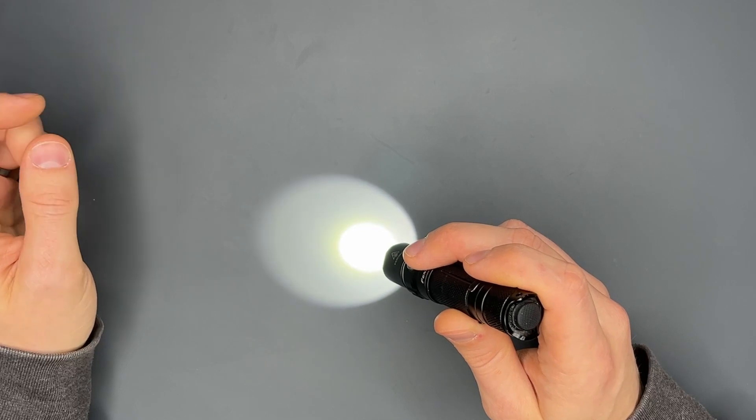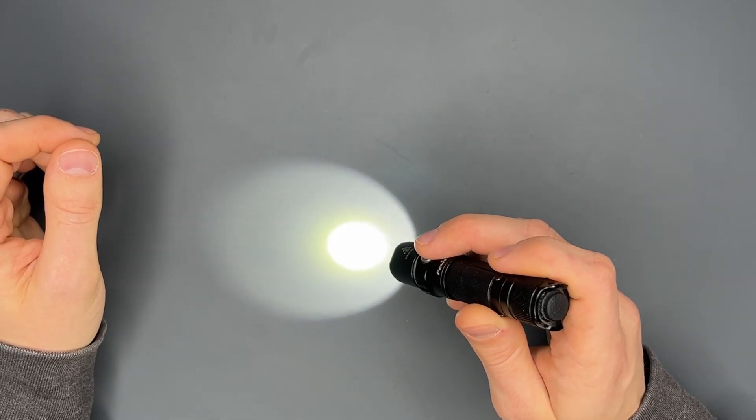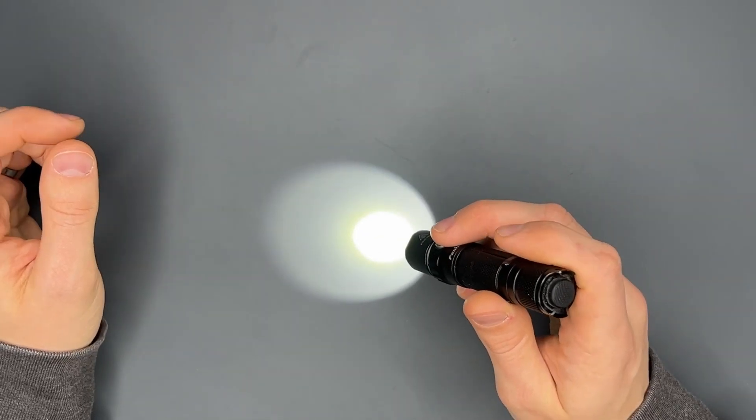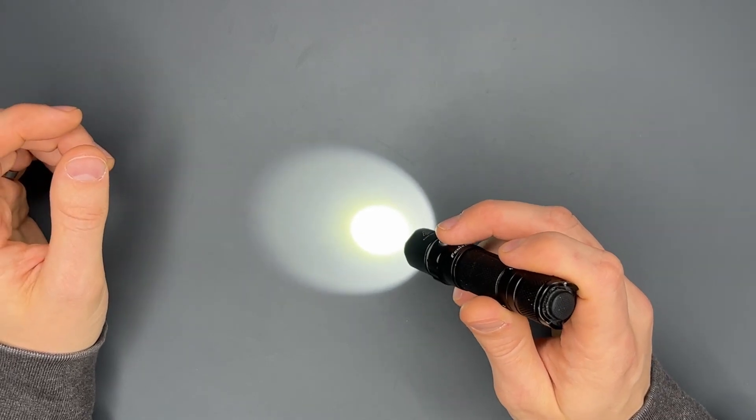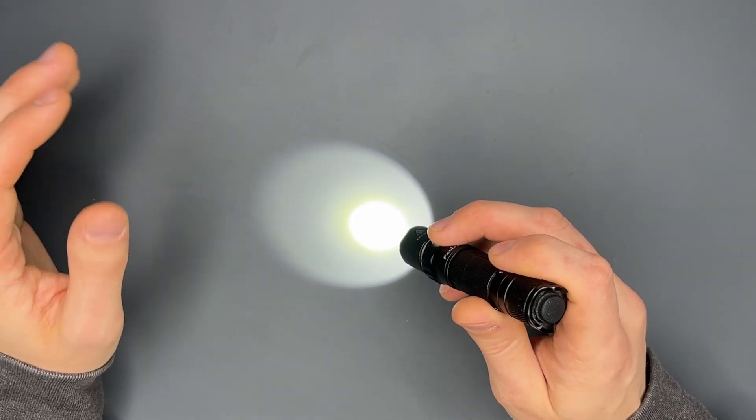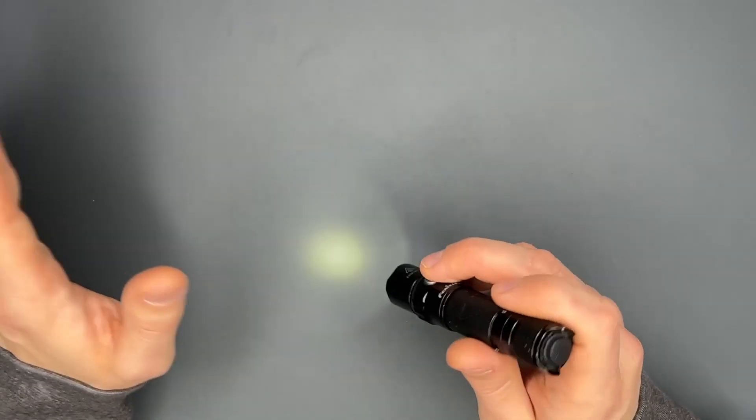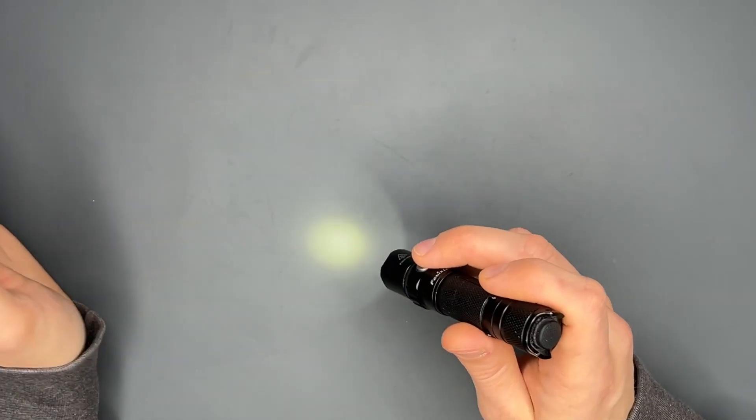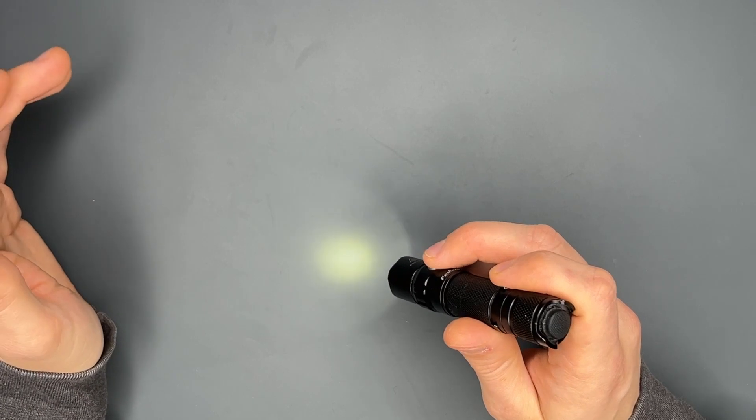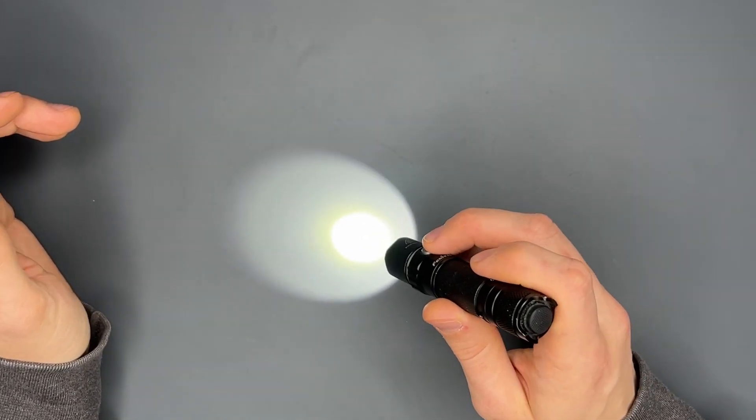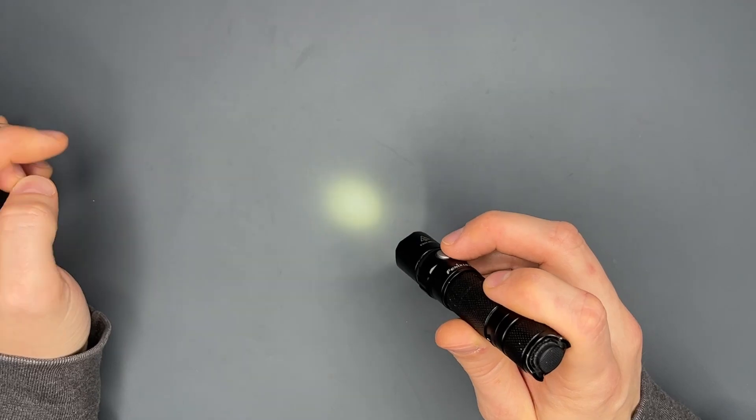On turbo you get 150 lumens. That is on the double A battery or on the rechargeable double A battery. And on the 14500 battery you would get 320 lumens. I can't show you that because I don't have a 14500 battery right now, but that will last you around one hour on both batteries.